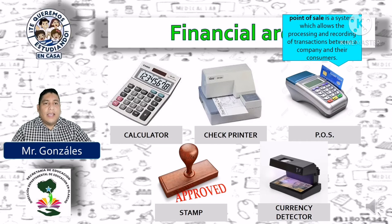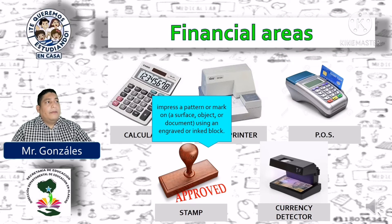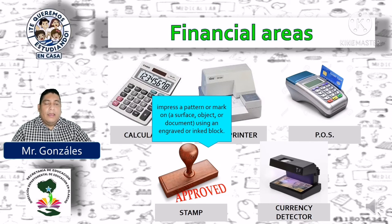POS — Point of Sale — it's a system which allows the processing and recording of transactions between the company and their consumers. Punto de venta: es un sistema que permite el procesamiento y grabación de las transacciones entre la compañía y sus consumidores — las que utilizamos para pagar con tarjeta de crédito o débito. Stamp: impress a pattern or mark on a surface, subject or document using an engraved or inked block. Imprime un patrón o marca en una superficie, objeto o documento usando un grabado o con tinta.